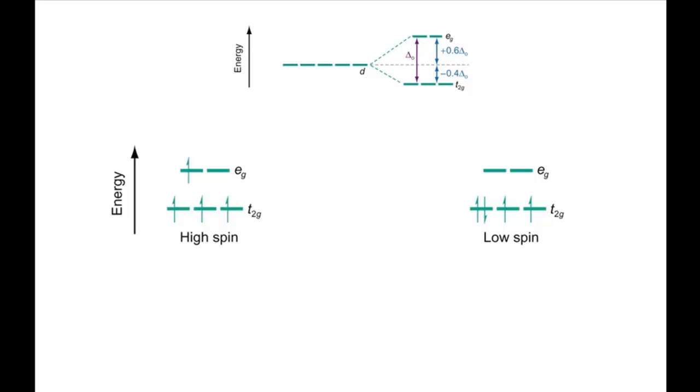Will a particular complex be high spin or low spin? Well, you can gain some insight into this by calculating the crystal field stabilization energy for the two possibilities, remembering that the T2G orbitals are stabilized by 0.4ΔO, and the EG orbitals are destabilized by 0.6ΔO.